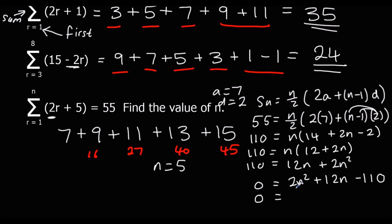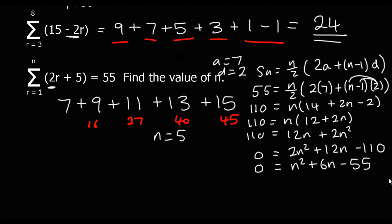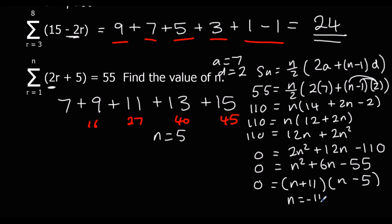I'm going to halve it — they're all even numbers — giving n squared plus six n minus fifty-five equals zero. Factorizing: we need two numbers that multiply to make fifty-five and add to make six. That's eleven and five: (n plus eleven)(n minus five) equals zero. So n equals minus eleven or n equals five. It can't be negative, so it has to be five. It was probably easier to just write out the numbers, but both methods work.